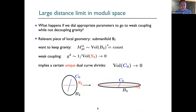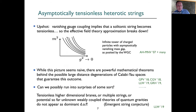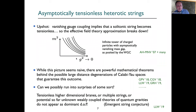So whenever we have: (A) gravity kept in the game, and (B) the gauge coupling made weak — so it wants to turn into a global symmetry — automatically something shrinks to zero size and becomes massless. The upshot is that we get an asymptotically tensionless heterotic string, and that is one of the main tenets of the weak gravity conjecture: there is an asymptotically tensionless tower of string excitations that appears as the gauge coupling is reduced.